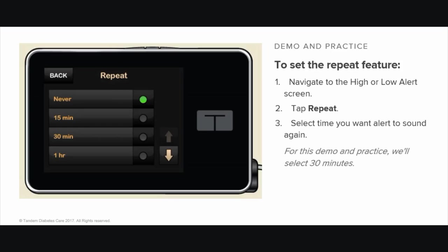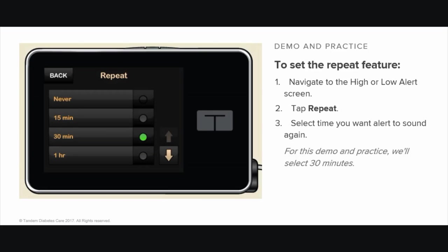To select the Repeat time, tap the time you want the alert to sound again. You can set the Repeat feature to sound again every 15 minutes, 30 minutes, 1 hour, 2 hours, 3 hours, 4 hours, or 5 hours. Use the up and down arrows to view all repeat options. For instance, if you select 1 hour as the Repeat time, the alert will sound every hour as long as your sensor glucose reading remains outside the alert value you choose. Once you select a value, the pump will return to the previous screen. For this demo, we'll select 30 minutes. Tap Save.